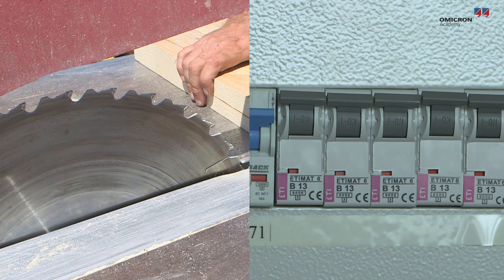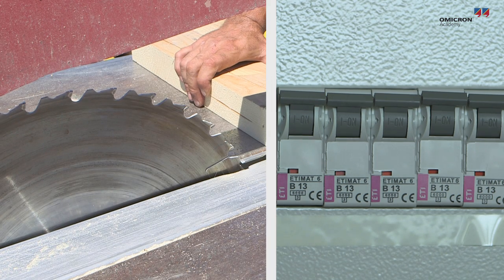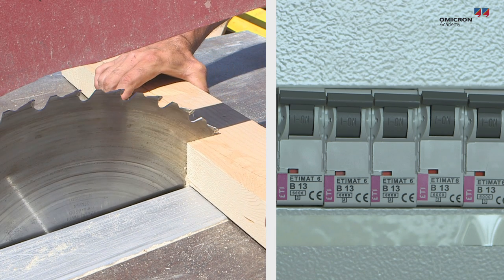In order to allow for typical appliance inrush currents, the MCB must remain stable during a minor short-term overload.